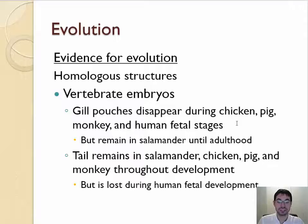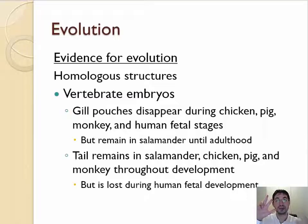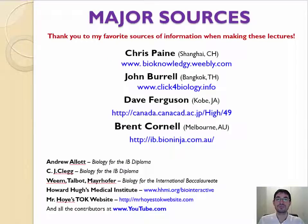Things like gill pouches disappear; the tail stays in some but disappears in others. So again, fossils, homologous structures, and selective breeding show evidence of evolution because they show proof of change in the heritable characteristics over time. Okay, we're done with part one of 5.1. Have a great rest of your day!